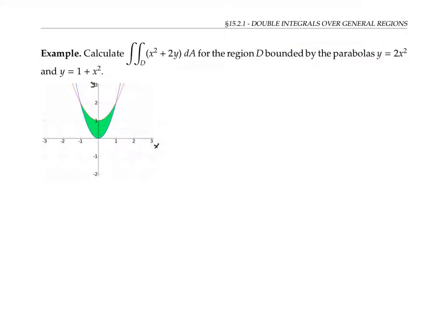Suppose we want to find the integral of the function x squared plus two y over the region D drawn below, bounded by the parabolas y equals two x squared — that's the blue curve on the bottom — and y equals one plus x squared, that's the red curve on the top. We can think of this integral as representing the volume between the surface z equals x squared plus two y and the xy plane above this region. Let's imagine slicing this volume with planes perpendicular to the yz plane, which gives us vertical cross sections that might look something like this.